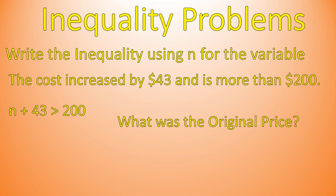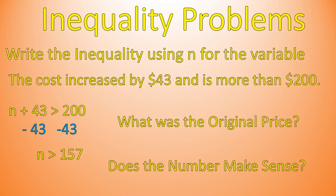Now for practice, figure out the original price — you need to solve this inequality. Pause the video and try. Welcome back. When solving an inequality, find your variable n, identify what's connected to it — plus 43 — and do the inverse, which is to subtract 43 from both sides. That leaves us with n is greater than 157. So the original cost was greater than $157, then it increased by $43, making it more than $200.